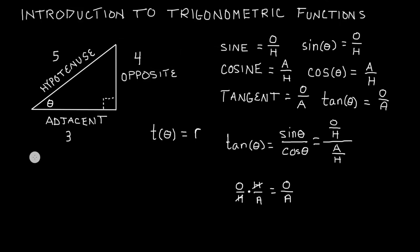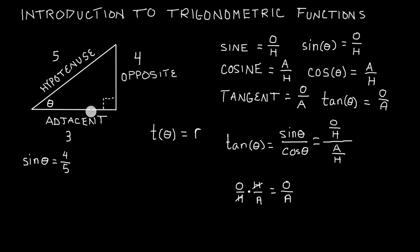Let's take a look at the sine of theta. The sine of theta is equal to the opposite divided by the hypotenuse. Theta is right here, and the side opposite of theta is 4. So the sine of theta is equal to 4 divided by the hypotenuse, which is 5 — sine of theta equals 4 over 5. The cosine of theta is equal to the adjacent divided by the hypotenuse. The side adjacent to theta has a value of 3 and the hypotenuse has a value of 5, so the cosine of theta equals 3 over 5.